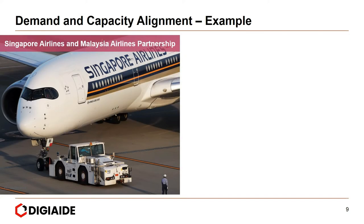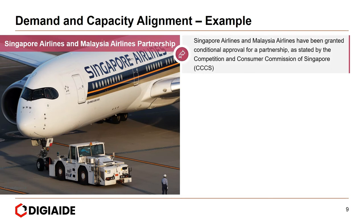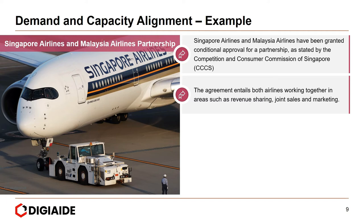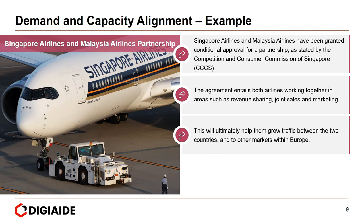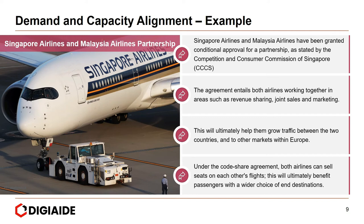Moving on to the example of Singapore Airlines and Malaysian Airlines partnership: both airlines have been granted conditional approval for a partnership by the Competition and Consumer Commission of Singapore. The agreement entails both airlines working together in areas such as revenue sharing, joint sales and marketing, helping grow traffic between the two countries and into European markets. Under the codeshare agreement, both airlines can sell seats on each other's flights, benefiting passengers with wider destination choices and widening their overall capacity — managing their supply of seats.